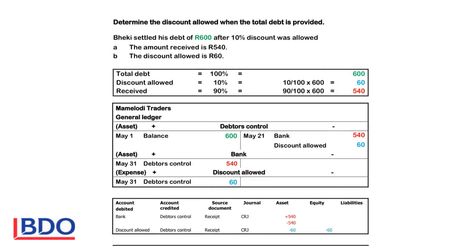Becky settled his debt of 600 after 10% discount was allowed. The total debt is 100%, so 100% equals 600 Rand. The discount is 10%, and the business will only receive 90% of the debt. The discount will be 10 divided by 100, times 600, which gives us 60 Rand. The debtors control has a credit balance of 600. We will credit the debtors control with the money received and the discount allowed to reduce the account with a total of 600.